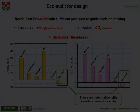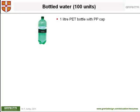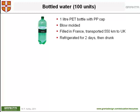Professor Ashby will now present a case study. Greetings from Cambridge. This is Mike Ashby, and I'm here to describe a little EcoAudit case study to show you how the EcoAudit tool works. It concerns a one-liter PET bottle with a polypropylene cap. The bottle is blow molded. The cap too is molded. The bottle is filled in France and transported 550 kilometers to the UK — that's the transport phase — and the bottle is refrigerated for two days. That consumes energy, and then it's drunk.